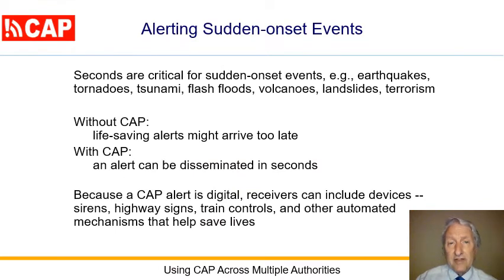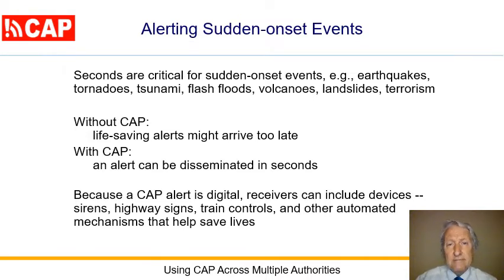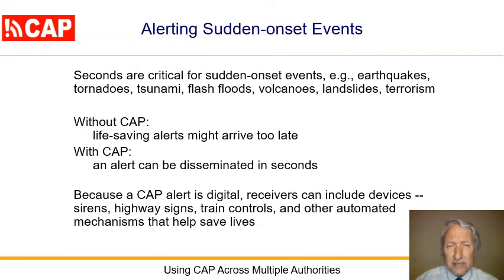Some types of hazard occur so suddenly that seconds mean the difference between timely, life-saving alerts and alerts that just arrived too late. Examples: earthquakes, tornadoes, tsunami, flash floods, volcanoes, landslides, terrorism.